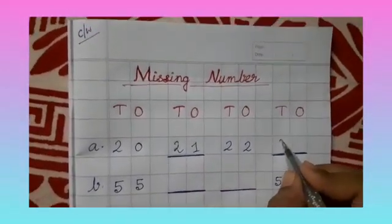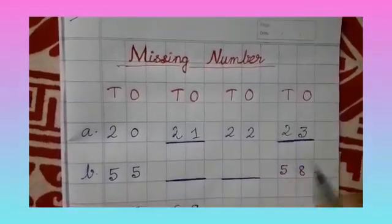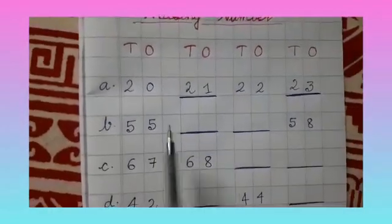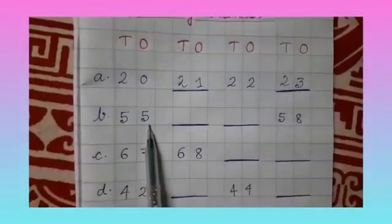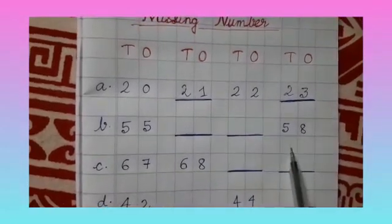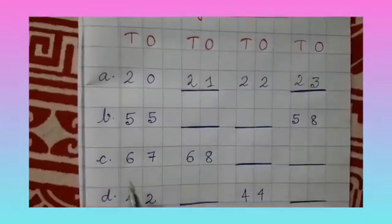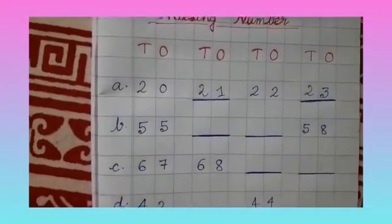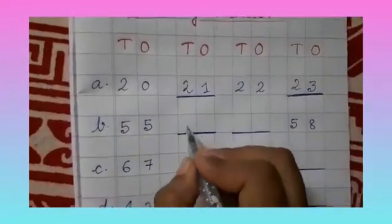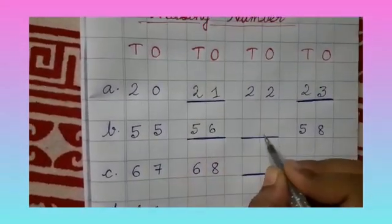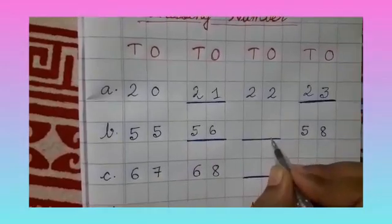Now see number b. In b there is 55, dash, another dash, then 58. After 55 it comes 56, so you will write here 56. Then after 56, 57.